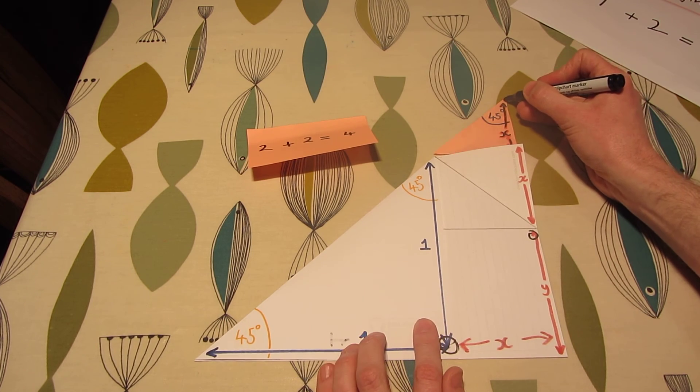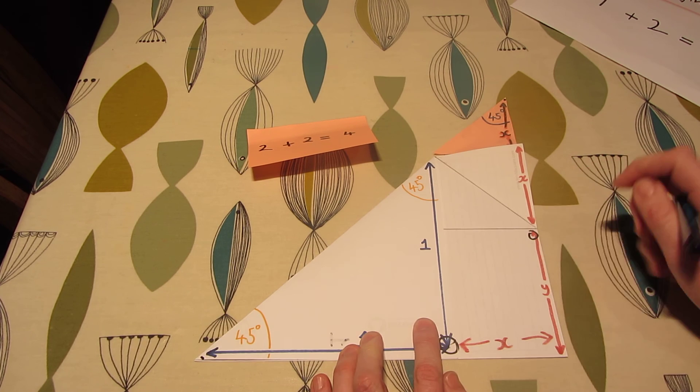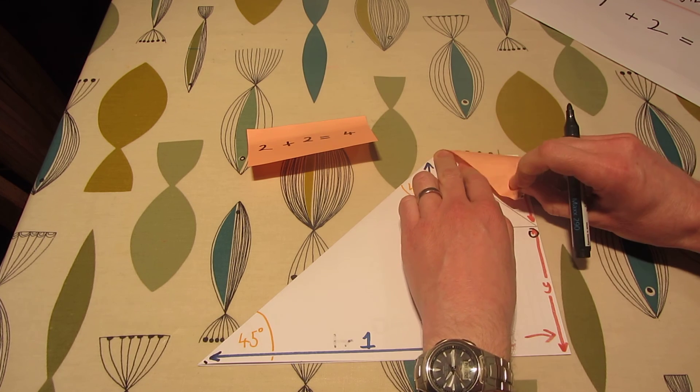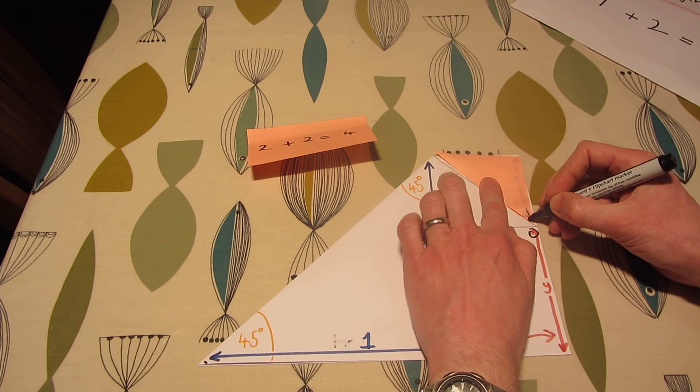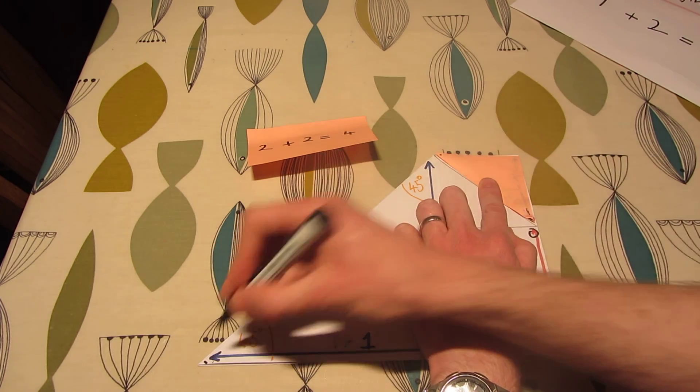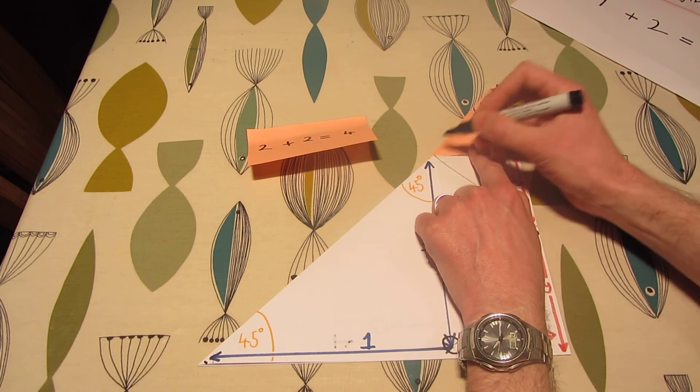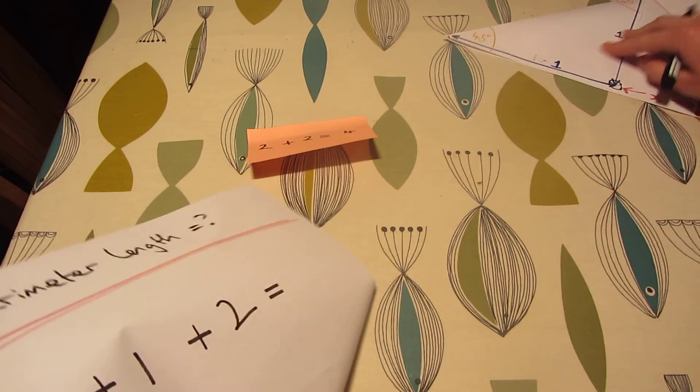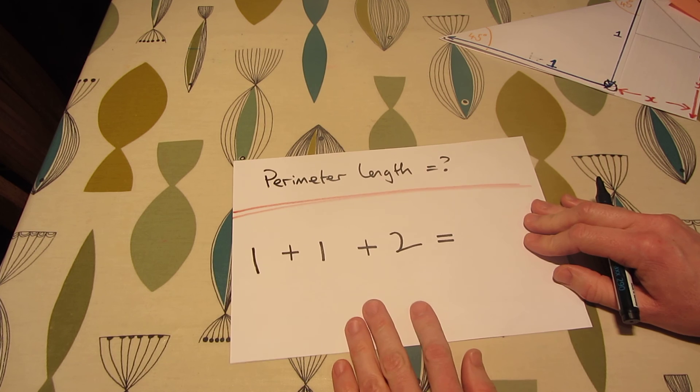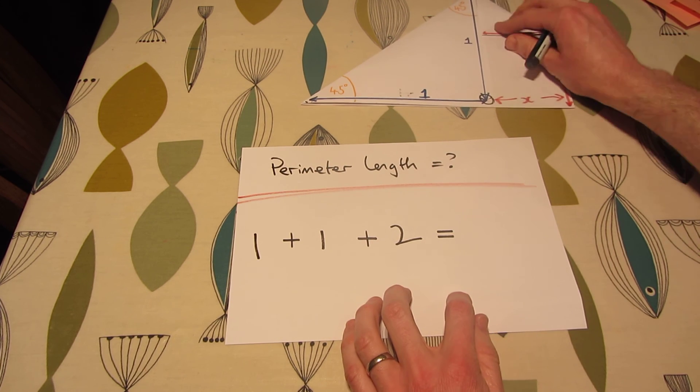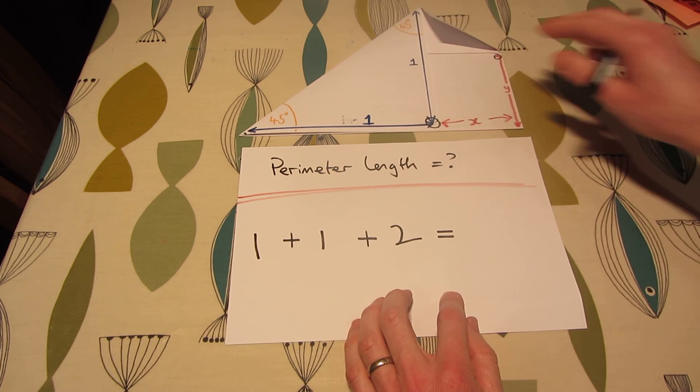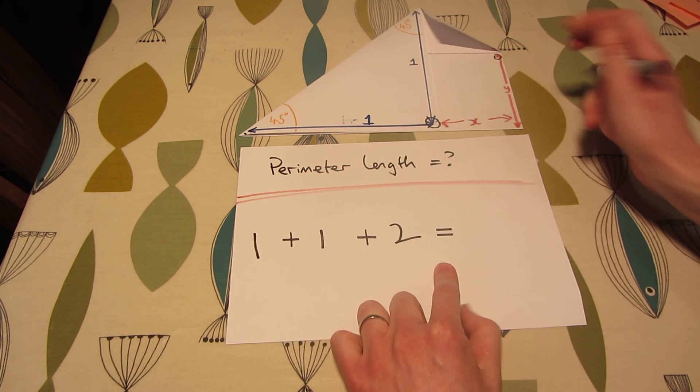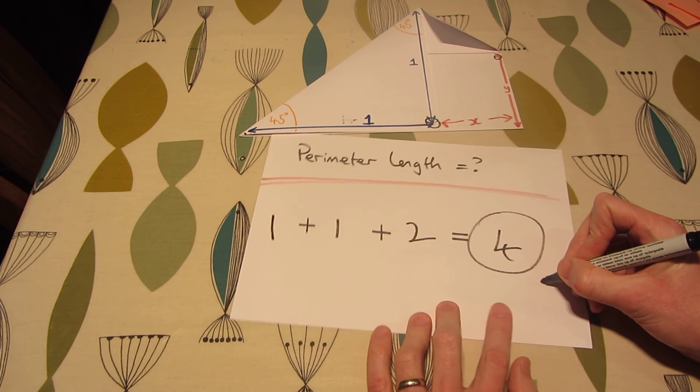So because we know that from there, all the way down to here, is two. But also, if we flipped it over, this is the same length from here to here to here, as from here to here to here. So, how long is the perimeter of this wonderful shape? One plus one plus two equals four.